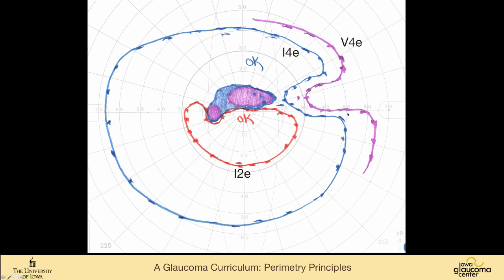Manual kinetic perimetry is very much an art form, and it takes years to become a great perimetrist — unfortunately, it's a dying art form. The OKs on the printout refer to the fact that supra-threshold testing was done there. Using the one-two-E target, the perimetrist tested inside this area to make sure they weren't missing a scotoma, and used the one-four-E to test in this area to make sure there was not another scotoma.